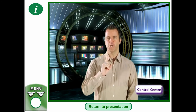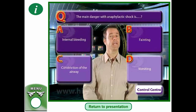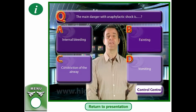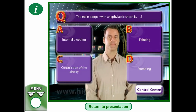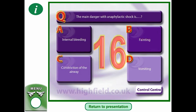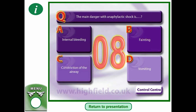Quiz question: The main danger with anaphylactic shock is — A, internal bleeding; B, fainting; C, constriction of the airway; or D, vomiting? Pause the video if you want. What is the main danger from anaphylactic shock?